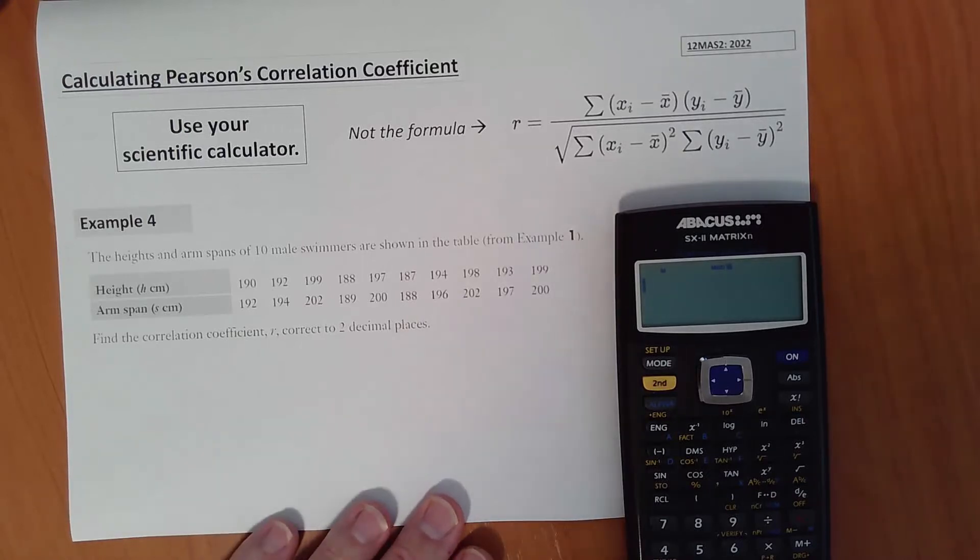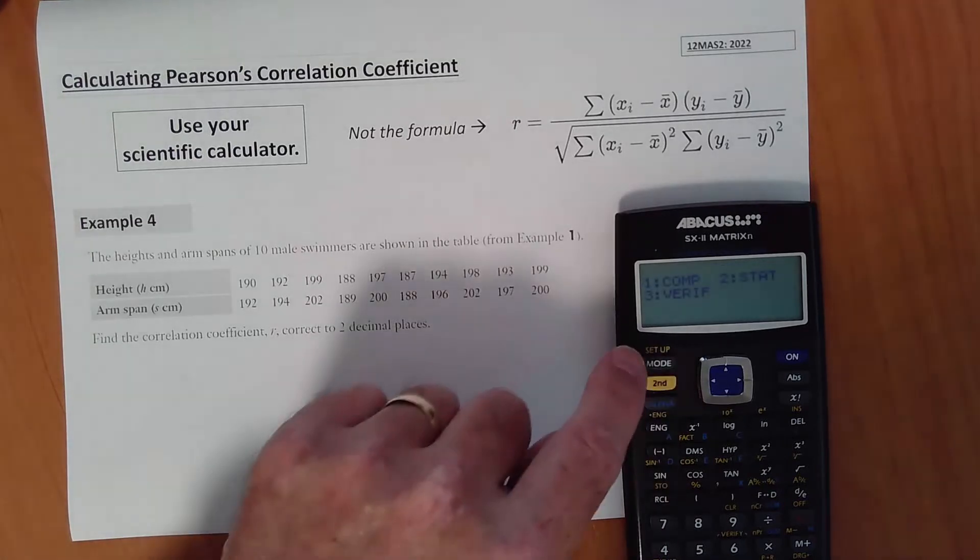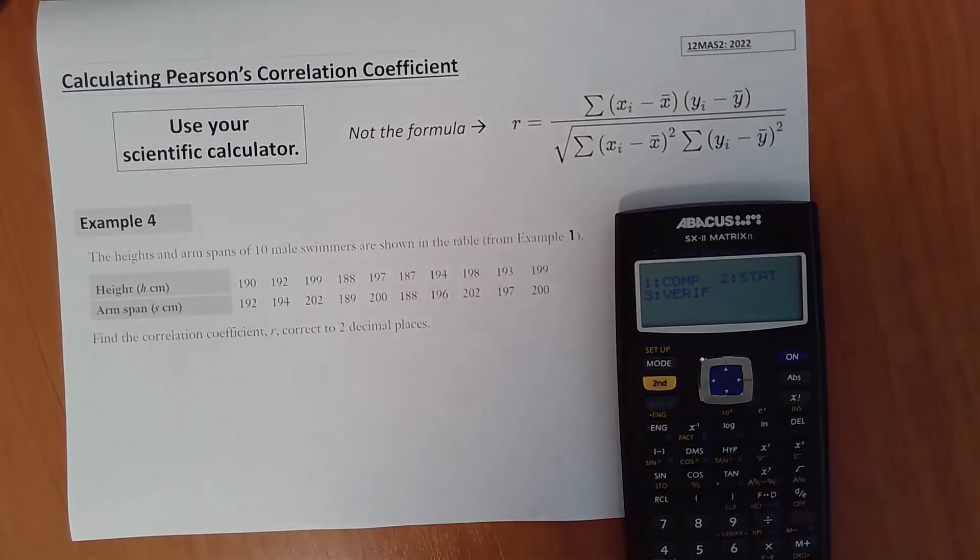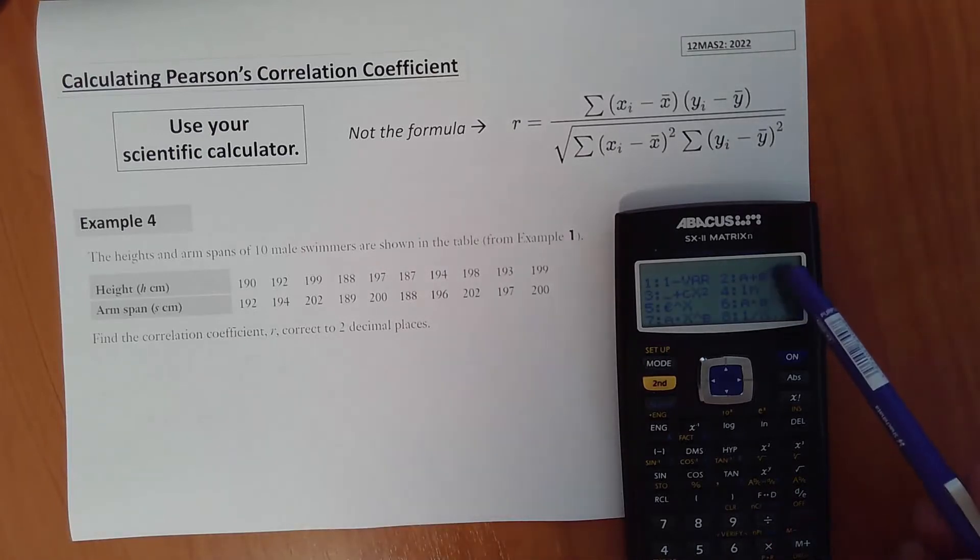First thing we need to do is set the mode on the calculator to statistics. Press the mode button, number 2 for stat. Then we need to select number 2 for the linear regression mode, A plus BX.